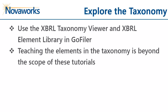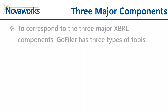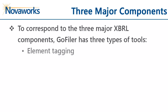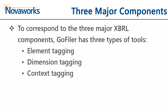Learning the ins and outs of the US GAAP taxonomy is beyond the scope of these tutorials. To correspond with the three major XBRL components, we have three types of tools in GoFiler. You can mark table components with elements, dimensions, and contexts.